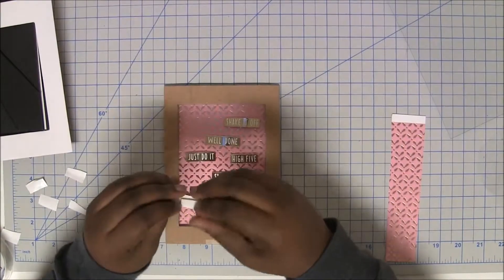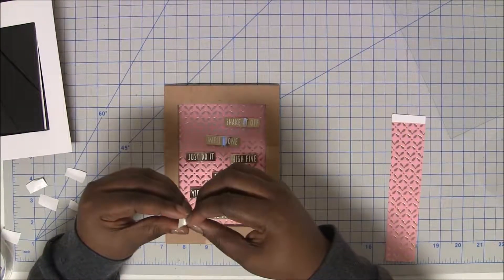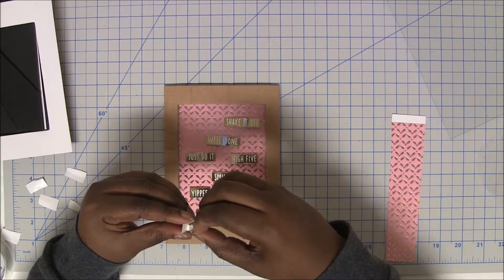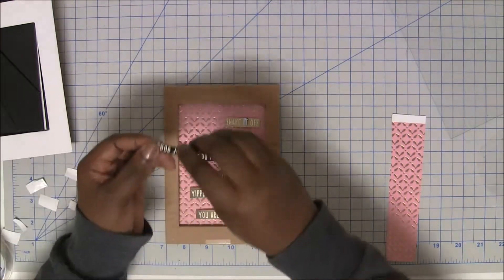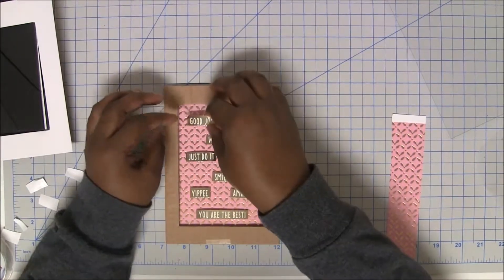So once you have it the way you want it, you can just go ahead and peel off the backs of that mounting tape and just stick it down.